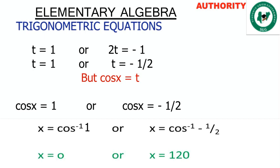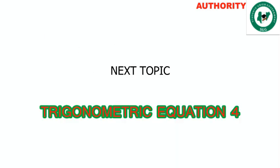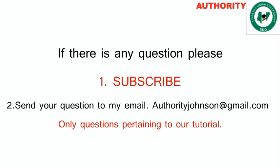So we have solved the equation cos 2x equals cos x. The values we obtained are: x equals 0 degrees or x equals 120 degrees. Thank you very much — please keep watching, subscribe if you have not, and make sure you are practicing. We will see you again next time.